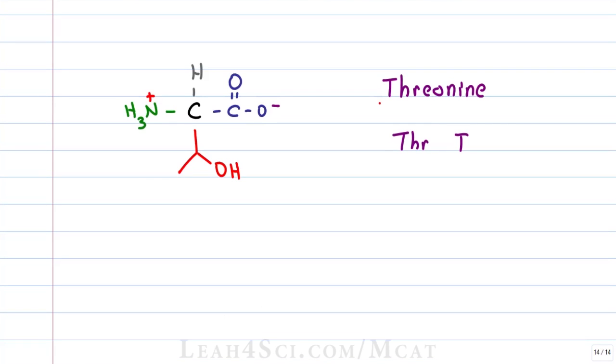Threonine, which is THR or T, has three groups on its side chain. It looks like a valine, which was an isopropyl, but instead of having two methyl groups coming off of that CH, we have one methyl and one alcohol. Just like serine, which had an OH, this amino acid is ideal for temporary reversible binding and phosphorylation on a protein or an enzyme.